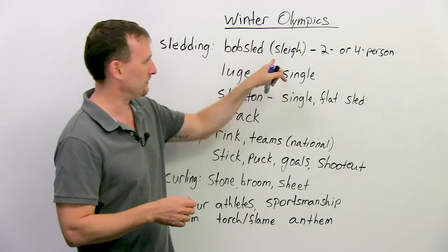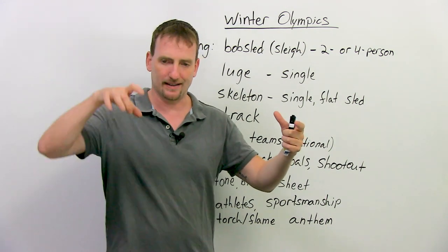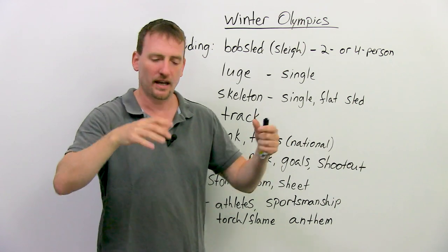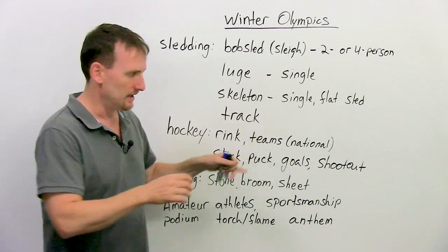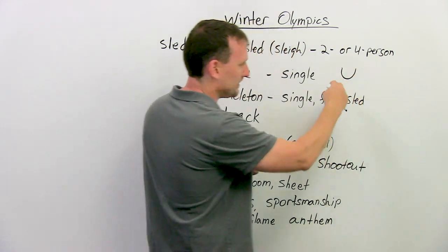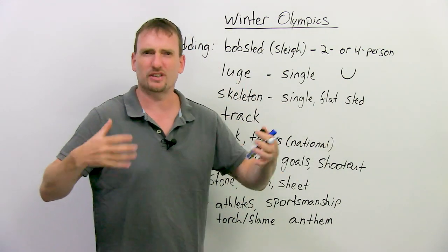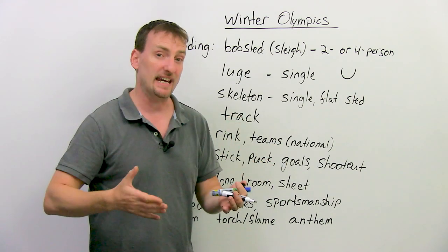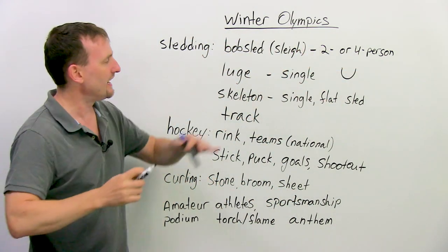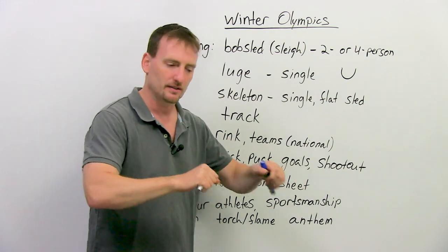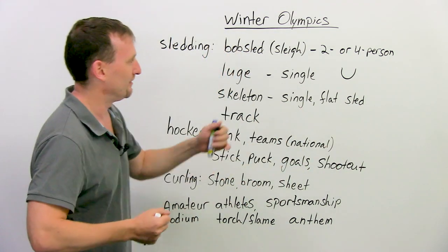A bobsled — or bobsleigh, both are okay — looks like a big hollow tube open at the top. Two or four guys push it on the track, which is a curved ice channel going all the way down the mountain at great speed. The bobsled looks a bit like a canoe and sits on long blades. They push it until it starts moving, then they have to jump inside, tuck in, and go down. Very exciting.